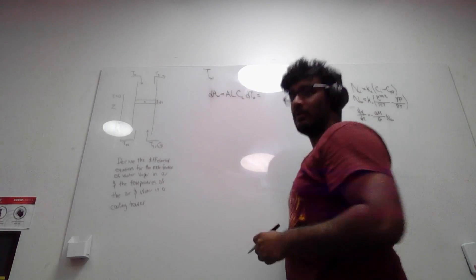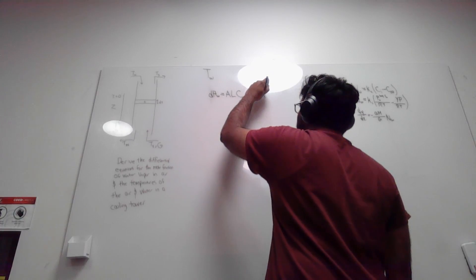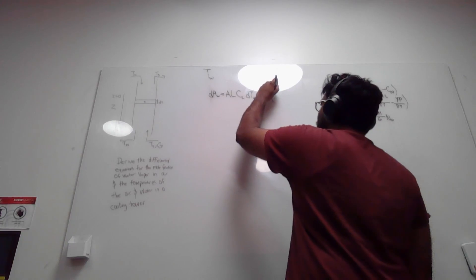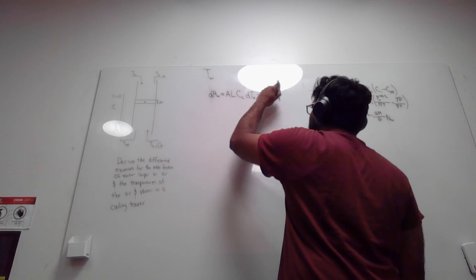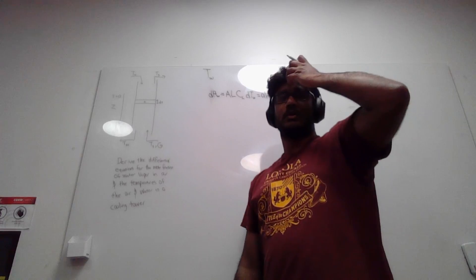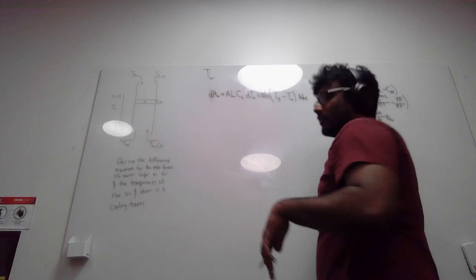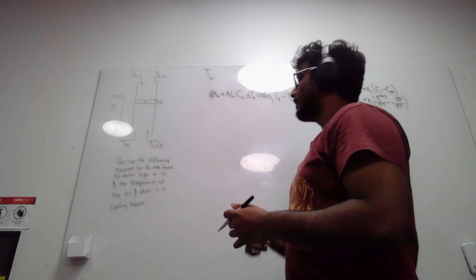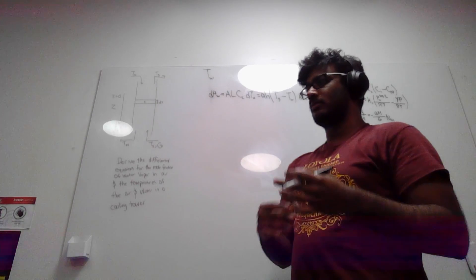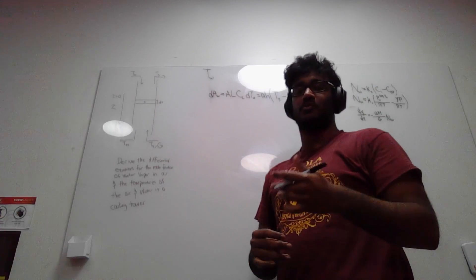Looking at the heat transfer specifically, we multiply the specific area times the heat transfer coefficient times the difference in temperature between the gas phase and the water, all times the differential volume a·dz. An important consideration is that with heat transfer there is also evaporation, and with evaporation water is leaving — meaning the temperature of the water goes down. So the evaporation term is subtracted from the heat transfer.